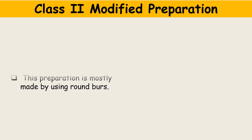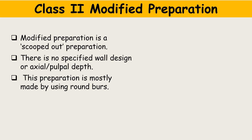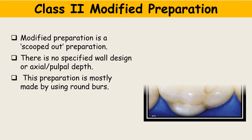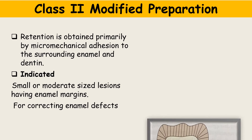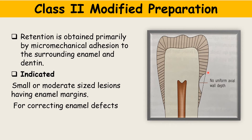The next design type is the class 2 modified preparation — a scooped-out preparation whose depth and extent are dependent upon that of the carious lesion. The cavity has no specific wall design or pulpal depth; it depends only on the extent of the carious lesion and is mostly made using round burrs. Retention is achieved primarily by micromechanical adhesion to the surrounding enamel and dentine. It is indicated for small or moderate size lesions having enamel margins and for correcting enamel defects.